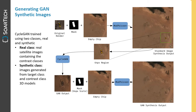A generative adversarial network can help us improve the quality of our generated synthetic images. In particular, we use the off-the-shelf CycleGAN network, trained using two classes: real and synthetic. Our real class consists of real satellite images containing the contrast classes; our synthetic class consists of images generated from both the target class as well as contrast class 3D models. These together are fed through the Mod Poisson process, then through the CycleGAN, and then back through Mod Poisson to create a much cleaner, more visually appealing output.